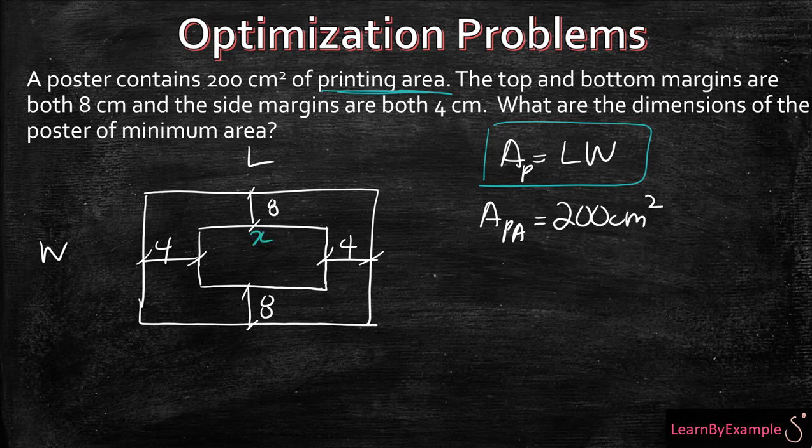So in this case, let's call this X, the longer length of the printing area, and call this Y. So in this case, the 200 centimeters squared is equal to X times Y. We are trying to get the dimensions of the poster of minimum area, so we're going to be using the printing area to help us find that.